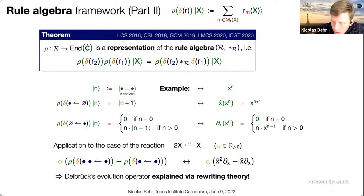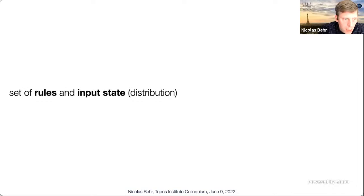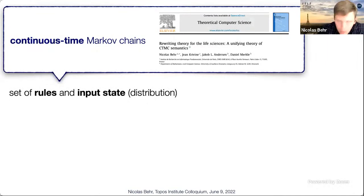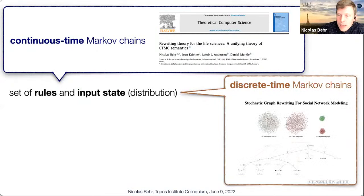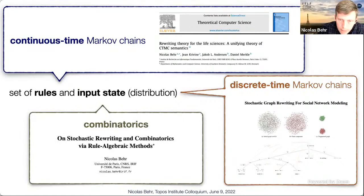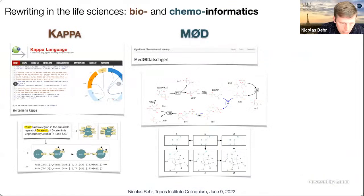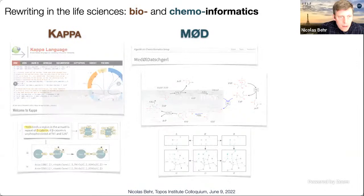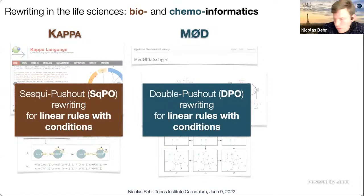This directly generalizes to many different kinds of rewriting semantics, including biochemistry ones. For a set of rules defining a system with some input state or distribution, you can get continuous Markov chain semantics — when rules have base rates and parameters — discrete-time Markov chains as used in social network modeling, and combinatorics. After eight years we can now give for the first time a full formalization: Kappa and MOLS for bio- and organochemistry are SqPO and DPO rewriting for rules with conditions.